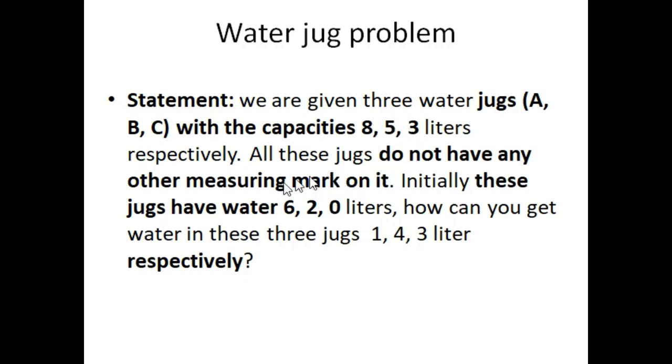So we have three jugs, here are the capacities, and there is no measuring mark on these jugs. So initially these jugs have water 6, 2, 0 liters. It means our initial state is: jug A has 6 liter water, jug B has 2 liter water, and jug C is empty.